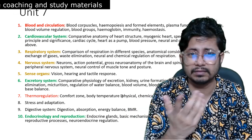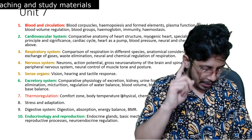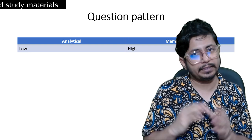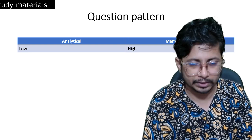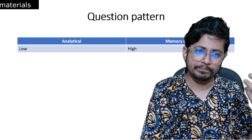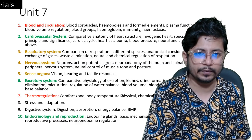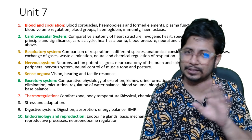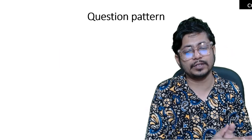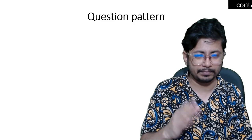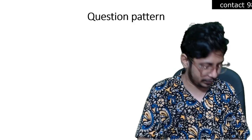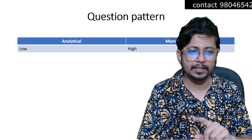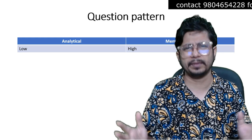Now let's discuss the question pattern for Unit 7 Human Physiology. There will be more memory-based questions than analytical questions. I give Unit 7 lesser weightage than Unit 6 because in Unit 6, if you prepare well, you get exact common questions. But in Unit 7, even if you prepare well, this is a topic that people pursue for MBBS and MD — human physiology is not a small topic. High numbers of memory-based questions are to be expected, with low analytical questions.